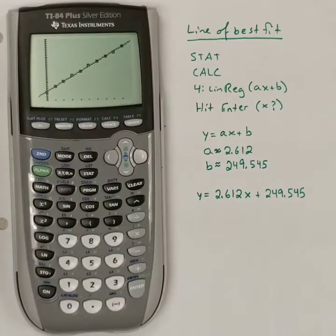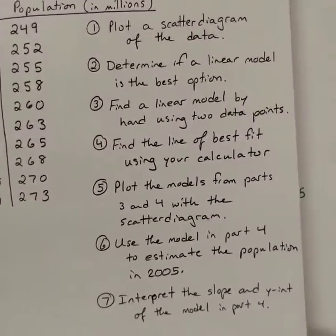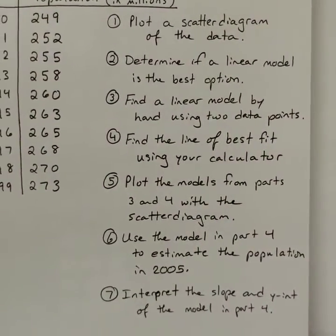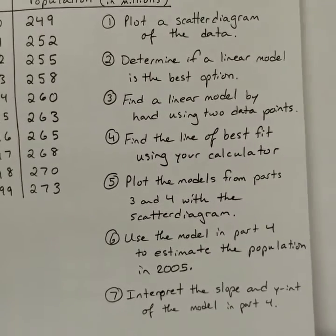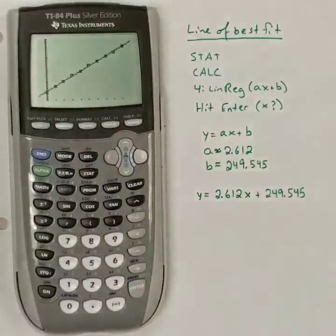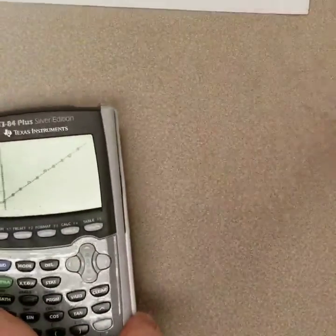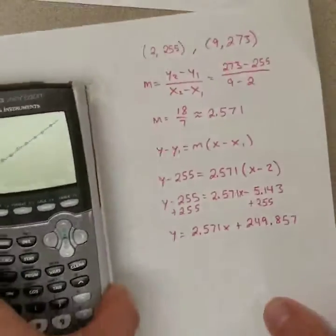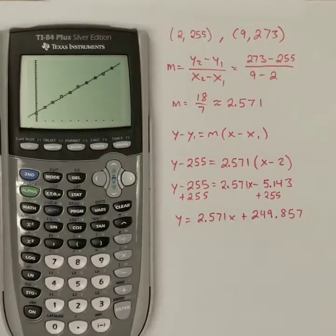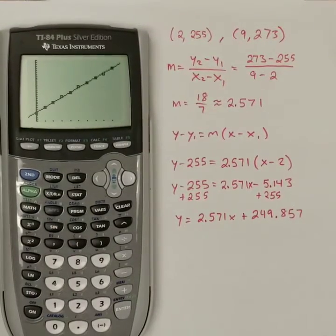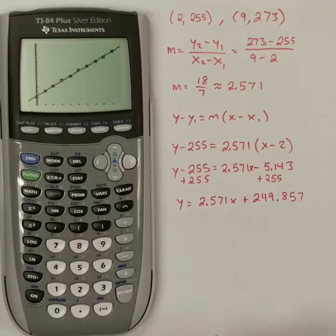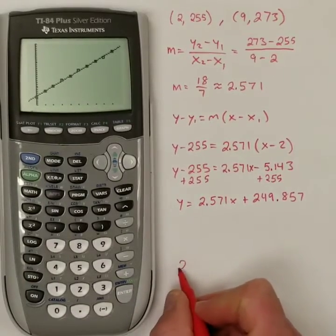So now I've done the plot. Now number six says use the model in part four to estimate the population in 2005. So I have the model from part four up here. To estimate the population in 2005, I need to plug in a value corresponding to 2005 as a year. Get rid of this. Draw it in or write it in on this paper. Remember, we were looking at the years as years after 1990. So the year 2005 is actually 15 years after 1990. So I would call that an X value of 15.